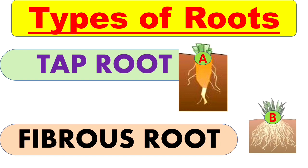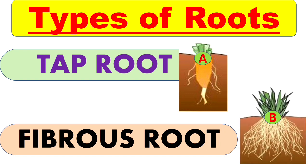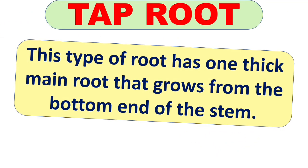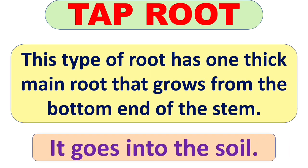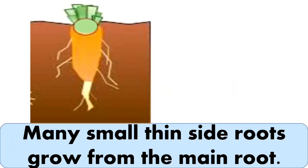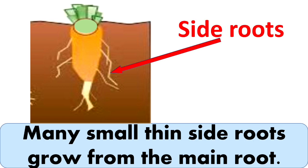The first type is taproot. This type of root has one thick main root that grows from the bottom end of the stem and goes into the soil. The main root grows straight down into the earth, and many small, thin side roots grow from the main root.